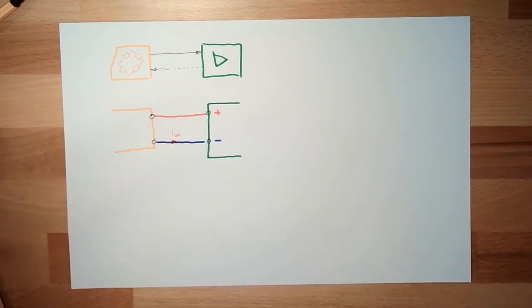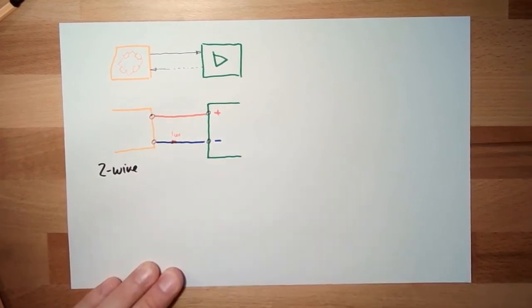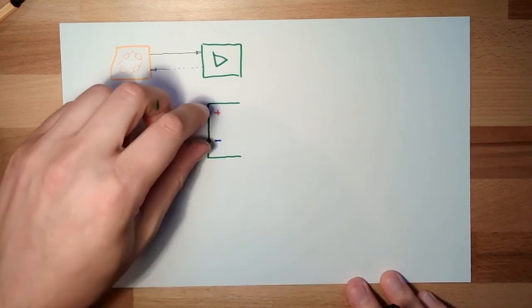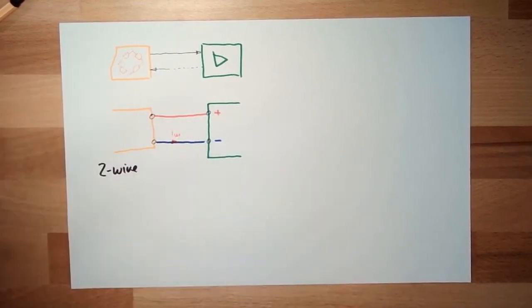Two-wire. Two-wire connection. This is the so-called two-wire. Two-wire connection. Just plus and minus with the power supply and the signal is the current, the strength of the current. And that's it.